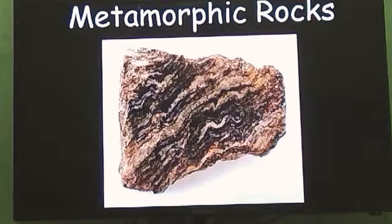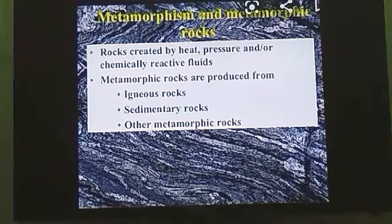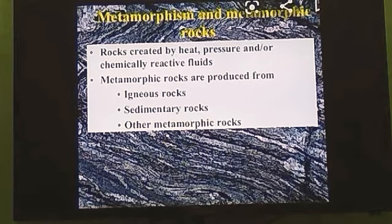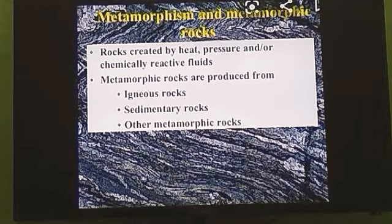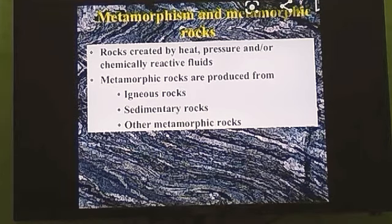Now we come to our third type — metamorphic rocks. These rocks are formed by heat, pressure, or chemically reactive fluids. They are also produced from igneous rocks, sedimentary rocks, and other metamorphic rocks. Metamorphic means the rock has been changed by heat and pressure — so igneous and sedimentary rocks can undergo the metamorphic process and ultimately change into metamorphic rocks.